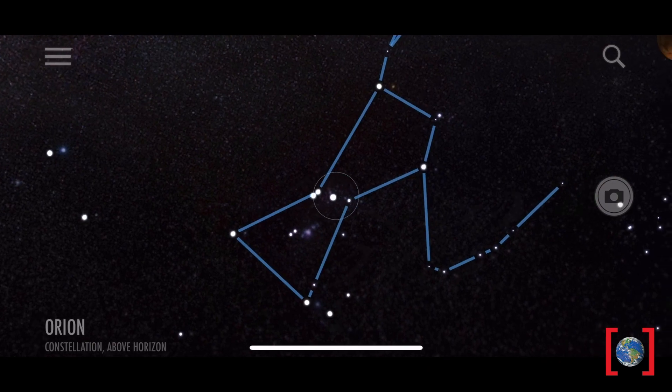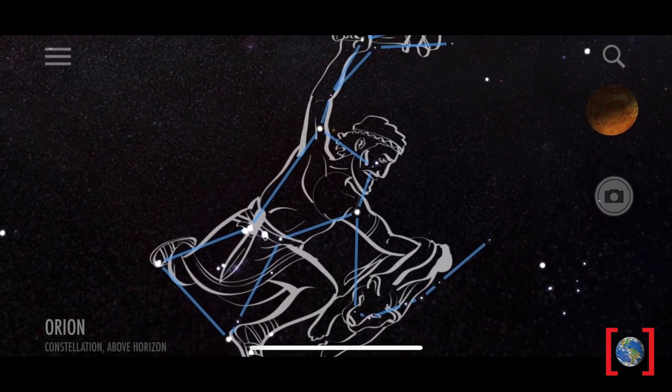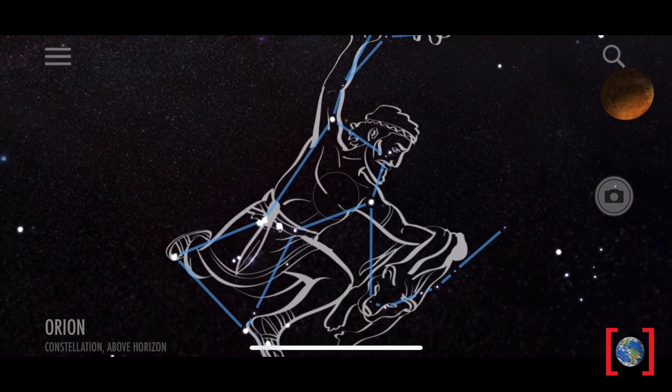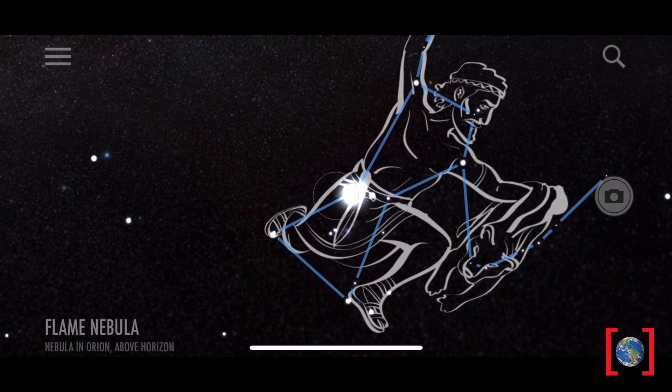And next to it is the Orion constellation. Orion has those three bright stars in his belt. One, two, three.